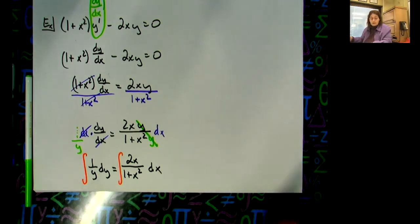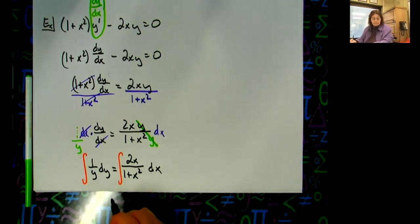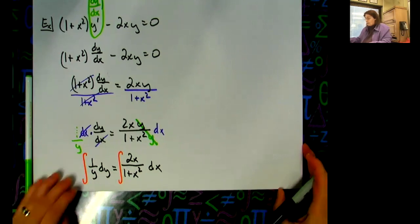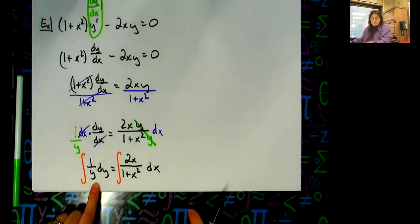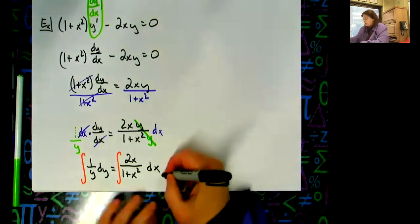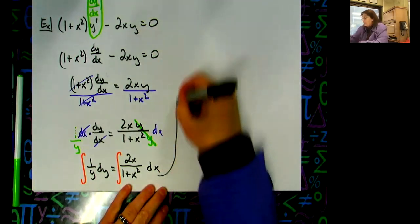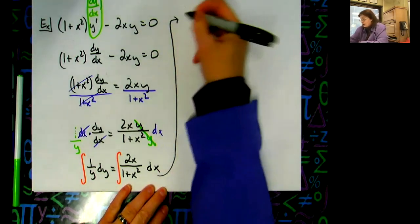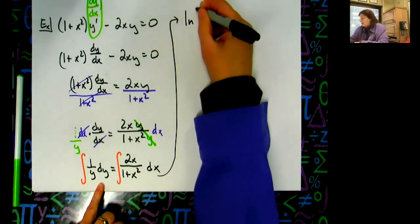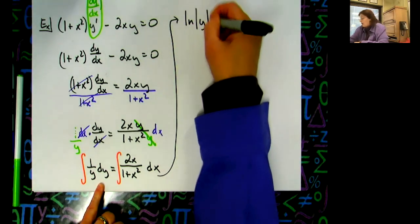On the left-hand side, the integral of one over y dy is straightforward — that gives natural log of the absolute value of y.